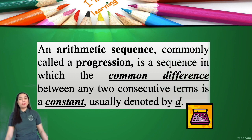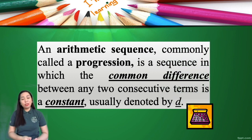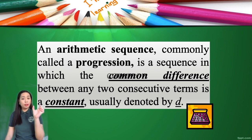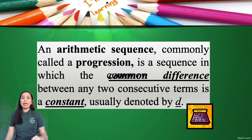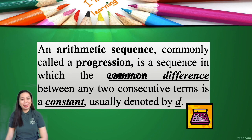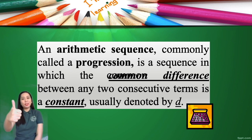For this time, we will be discussing the first kind of sequence for our lesson — the arithmetic sequence, also called arithmetic progression. This is a sequence in which the common difference — meaning we have the same difference between the numbers — is constant, denoted by the letter D. Let's help identify if a given sequence is an arithmetic sequence or not.